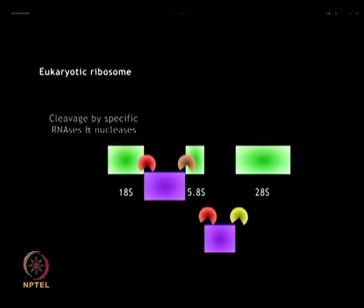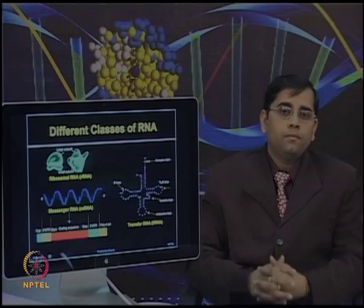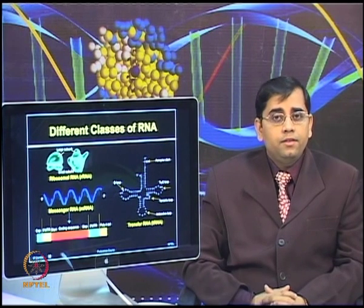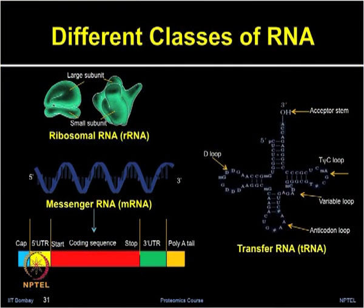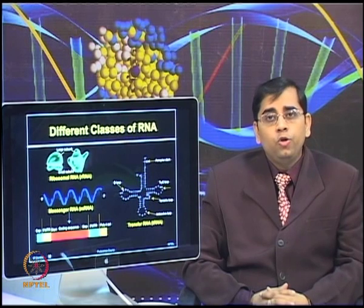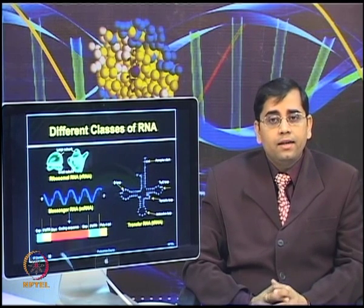In eukaryotes, the 80S ribosome is composed of 60S and 40S subunits. In eukaryotic vertebrates, a single 45S rRNA precursor is processed to give rise to 18S, 5.8S, and 28S rRNAs. The different classes of RNA are essentially three: messenger RNA (mRNA), which is the least abundant at around 5% of total RNA and provides the template for protein synthesis; transfer RNA (tRNA), which carries amino acids in an activated form to the ribosome; and ribosomal RNA (rRNA), which is the major component of the ribosome and provides catalytic and structural roles.